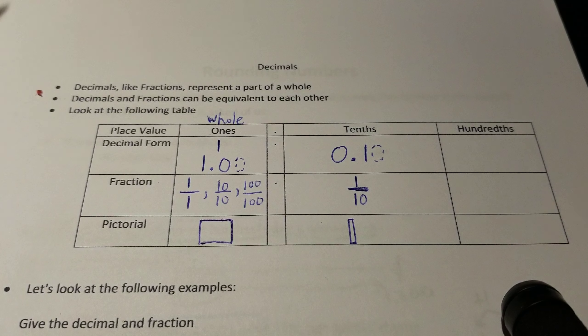So let's go ahead and look at a couple of examples here. I've got these four models of decimals and fractions. So let's look at the first one. We'll call this one model one, two, three, and four.